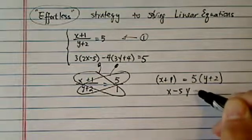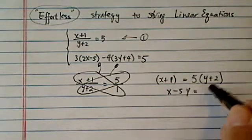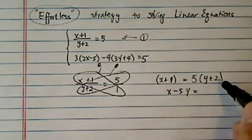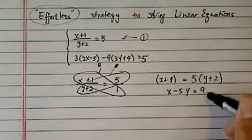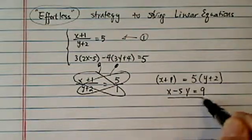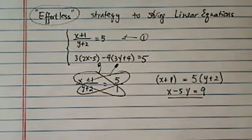All right, so over here, let's clean it up a little bit. x minus 5y is equal... There's 1 here, there's 10 on this side. So if you subtract the 1 over here, you have a 9. So that's the first equation, gets cleaned up.